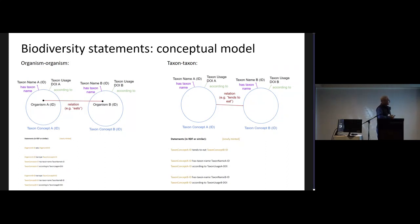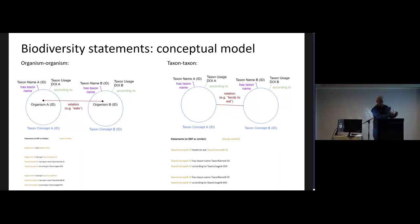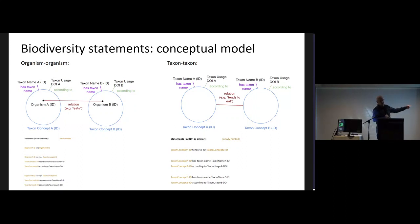For biodiversity, in a collaboration between Pensoft and a Swiss company named Knowledge Pixels, we created a conceptual model for biodiversity nanopublications. These two versions or approaches to the model are based first on the assumption that we have relationships between organisms, and in the second part of the model we have relationships between more abstract entities like taxa. We can say that organism A, identified by an ID, is organism B and belongs to a taxon concept ID and has a particular taxon name.